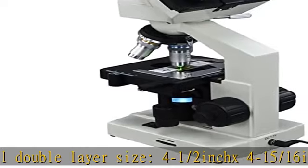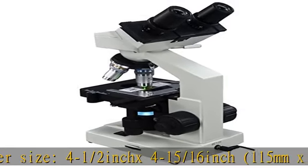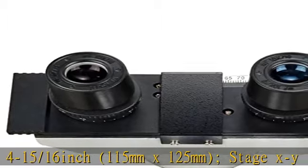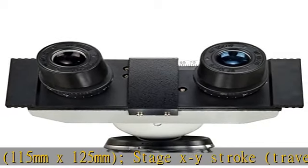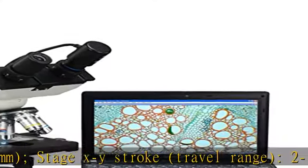Condenser and diaphragm: NA 1.25 Abbe condenser with iris diaphragm transmitted. Lower illuminator: LED light, intensity adjustable.